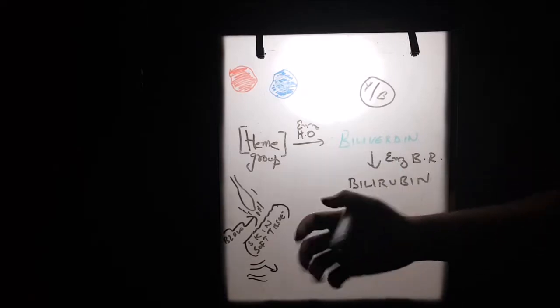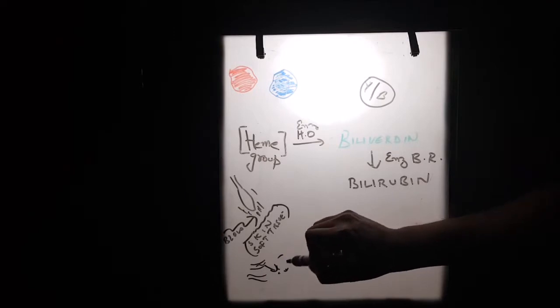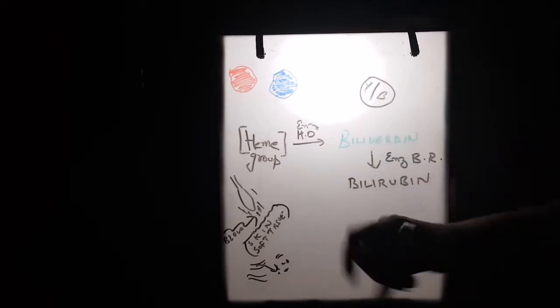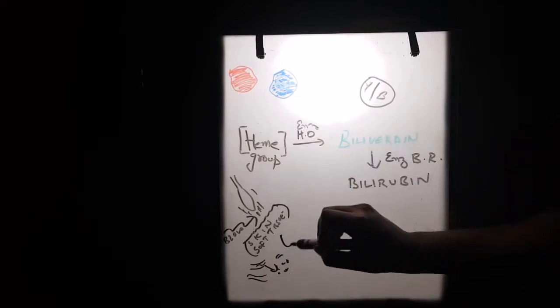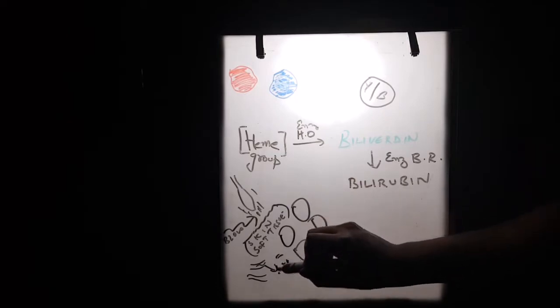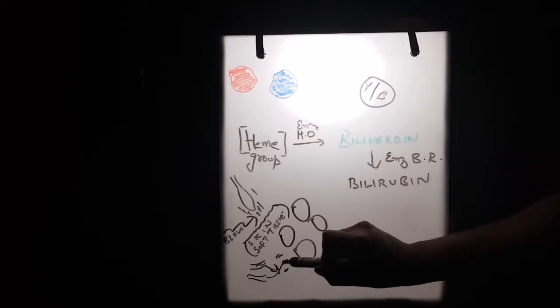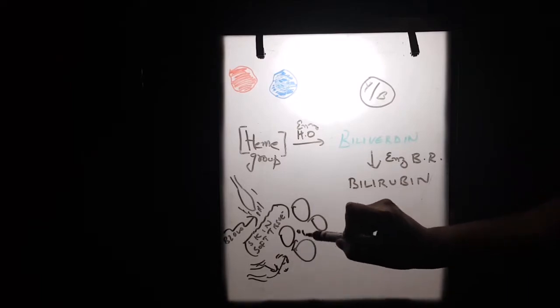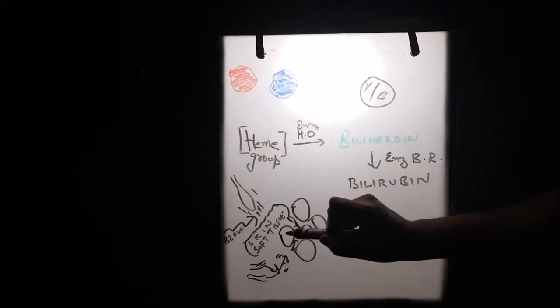The blood would start oozing out into the extracellular space. For example, these are the cells, and this was the capillary of blood. What will happen is the blood will flow into the extracellular spaces, like this. This is the cell.